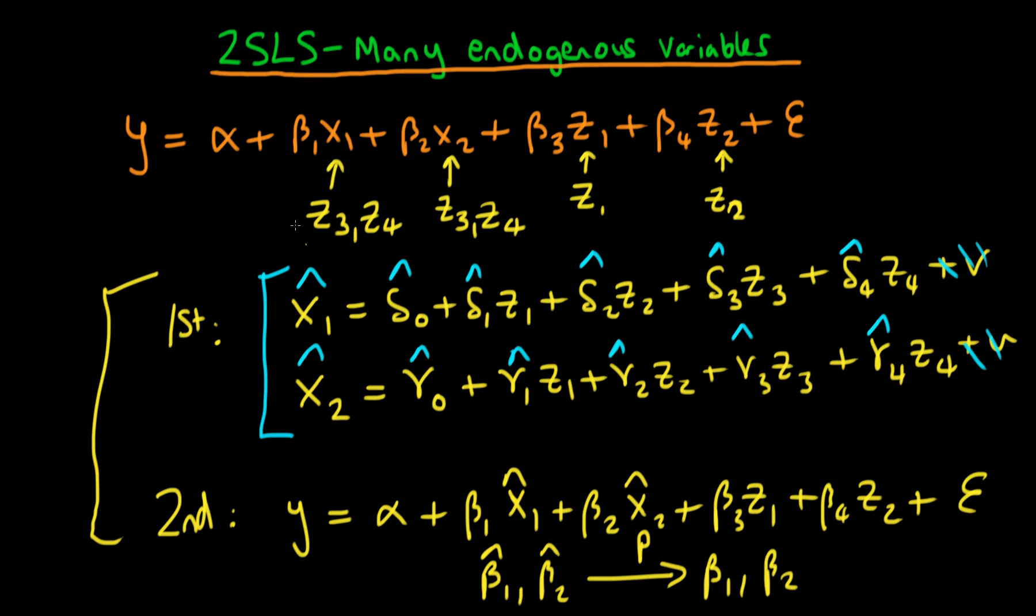And notice that in estimating this, I required that the number of exogenous instruments, those are variables which are exogenous and they are excluded from the structural equation, which is this equation, I required that that number of exogenous instrumental variables be at least as large as the number of endogenous variables. And this is actually encapsulated in something which is known as the order condition, which is that the number of excluded exogenous variables, which we call instruments, must be at least as big as the number of endogenous variables within our regression.